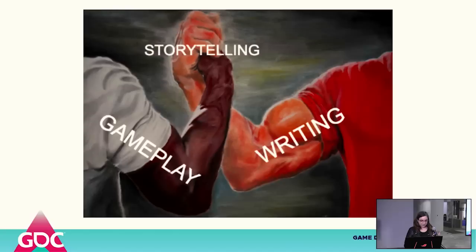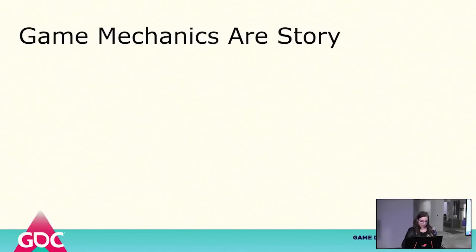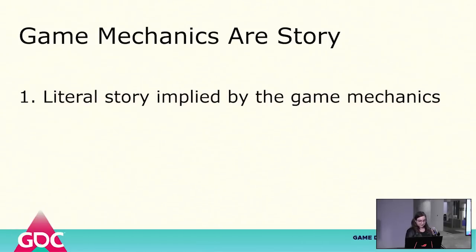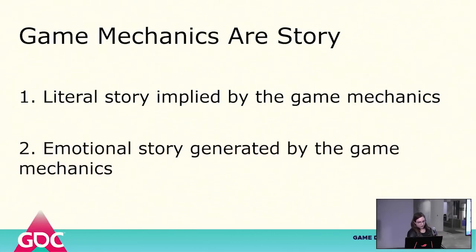In the same way we plan major beats of a story through acts, those beats are also composed of buckets of actions we're asking the player to perform. And what the player does, the character often does as well, resulting in an inherent characterization of the playable character. In practice, I find there are two helpful ways of looking at this: the literal story implied by the game mechanics — the plot, theme, characterizations — and the emotional arc generated by the game mechanics, the arc of emotions and the emotional journey.